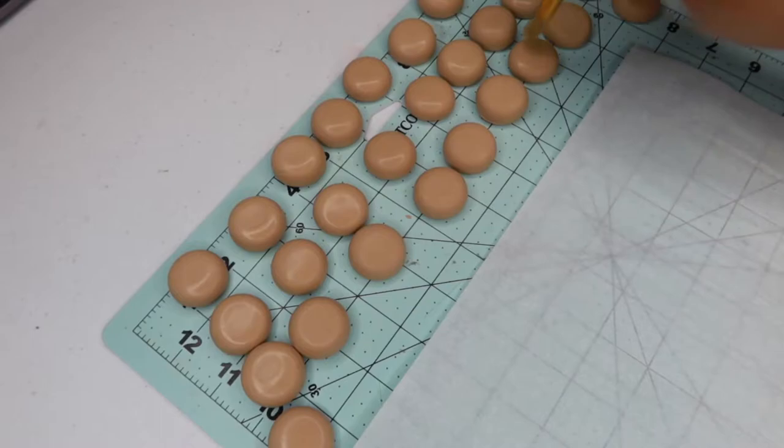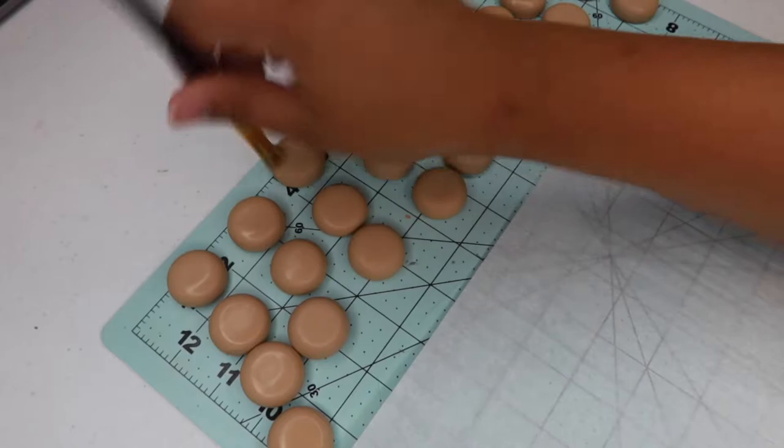Now, moving on with that stiff paintbrush, I go ahead and tap all of them over just so I can get a good texture on them. That way, I can make them look as realistic as possible.